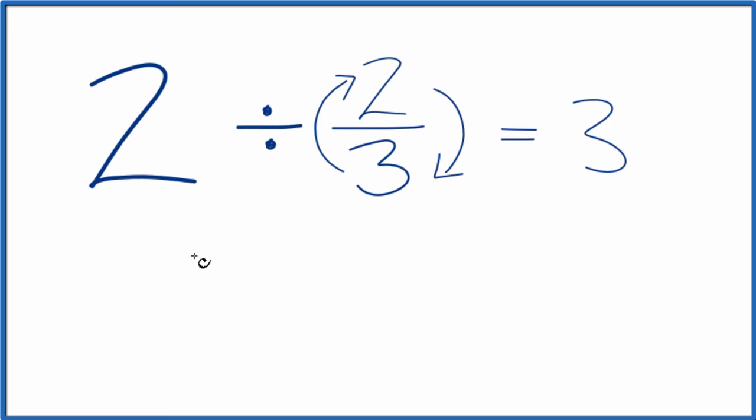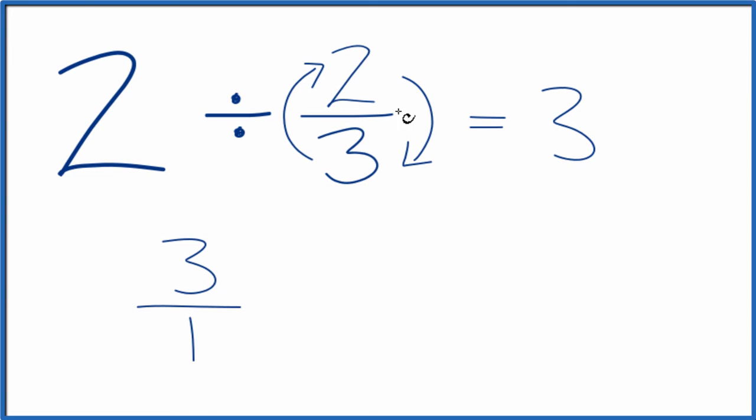So let's take three. Let's call it three over one times two-thirds. Three times two, that's six. One times three is three. And three goes into six two times, which is what we started with.